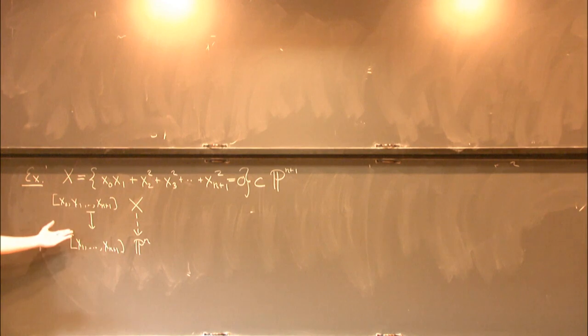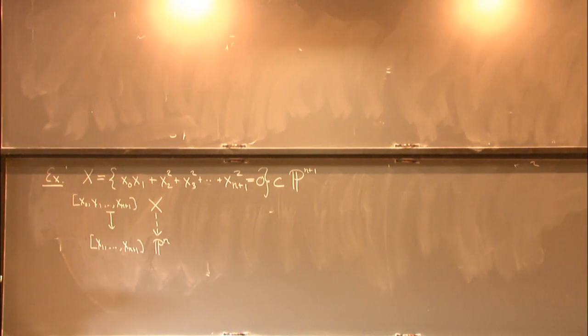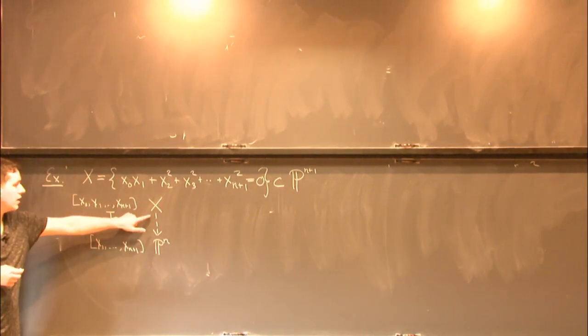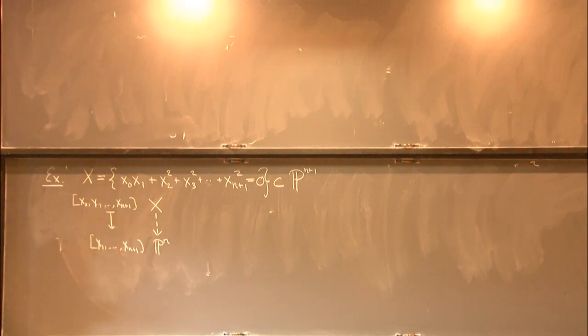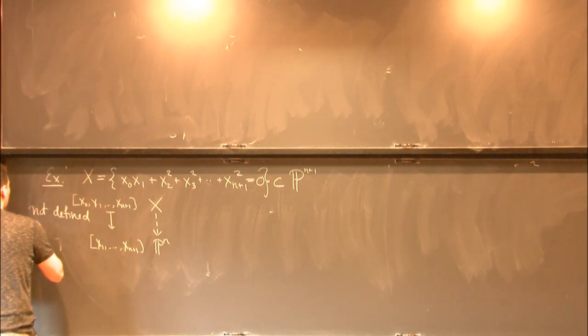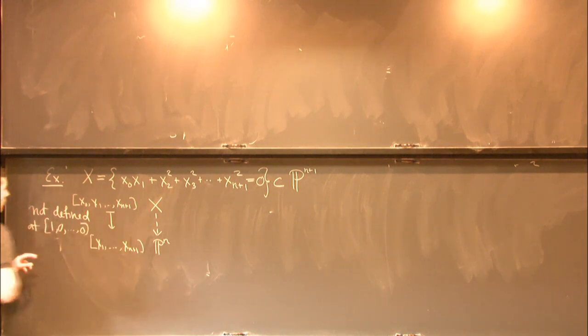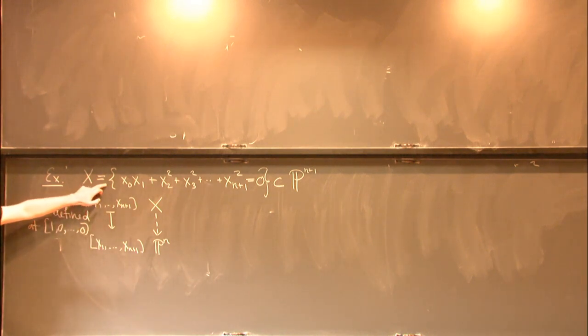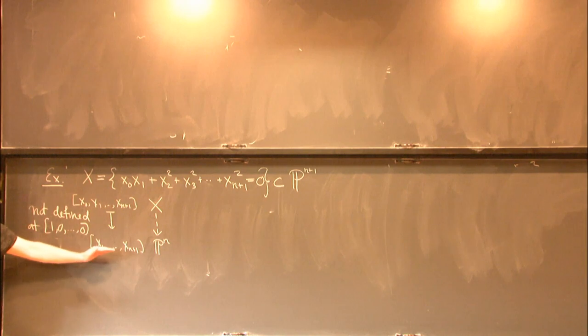And this is a pretty simple map. There's one tiny subtlety about it, which is that it's not defined everywhere. So that's the reason I wrote dot, dot, dot. So this is not defined at the point 1, 0, 0, 0, 0, 0. So this point certainly satisfies this equation, but all zeros is not a point in projective space.